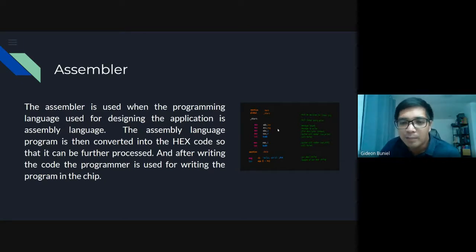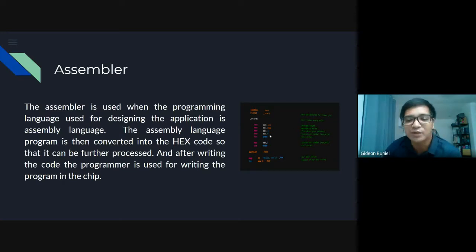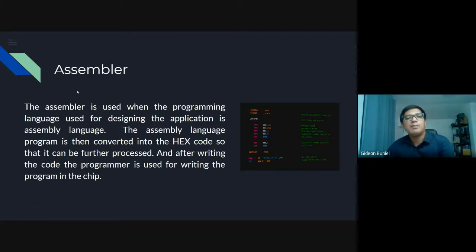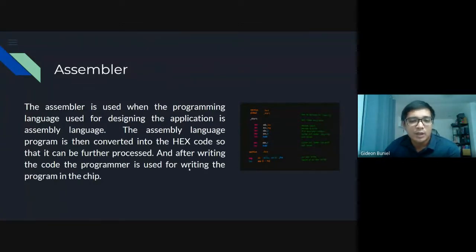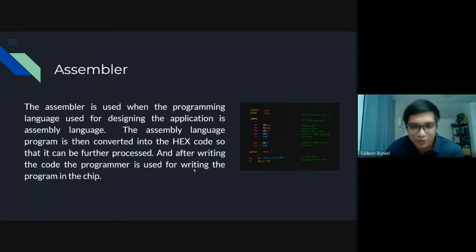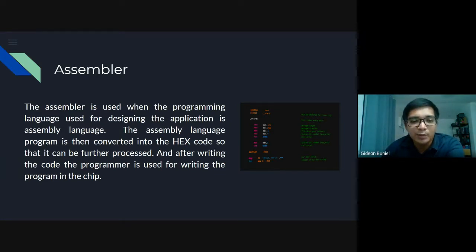When you upload the assembler, the computer interprets it as binary — 1, 0, 1, 0, 1, 0. Your letters and numbers each have different binary values that the computer reads. After writing the code, the programmer is used for writing the program into the chip. You will always need a programmer, like the RS-485. Some components in the embedded system cannot be programmed without RS-485 because it's the only port you can upload the code through.